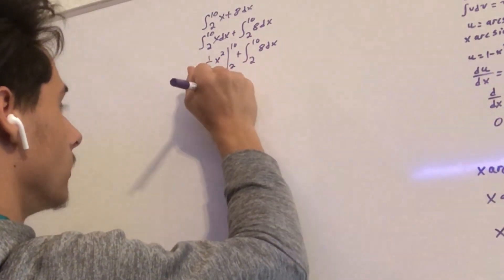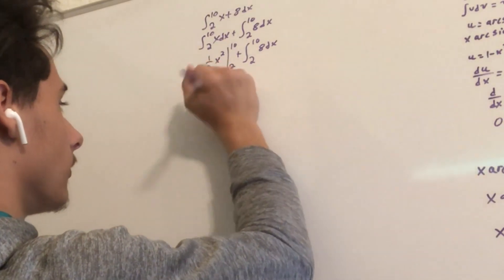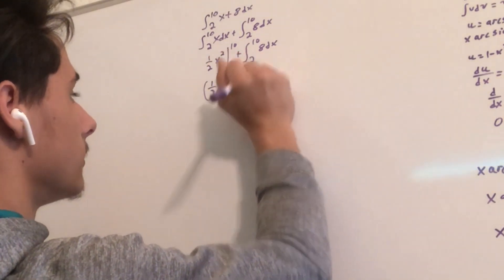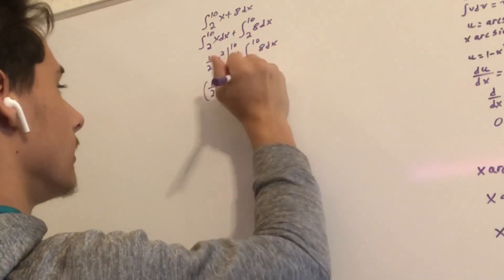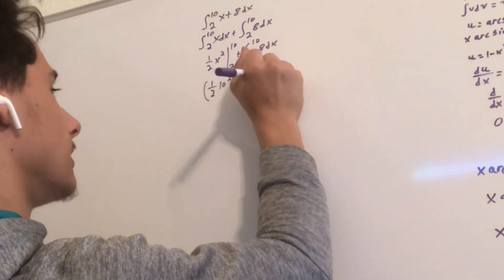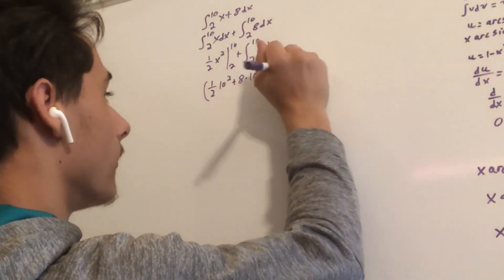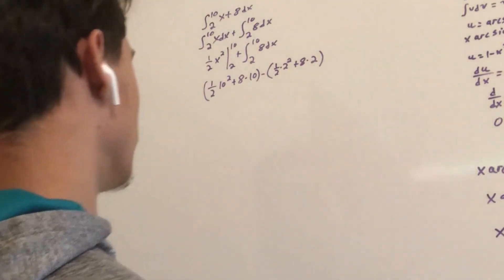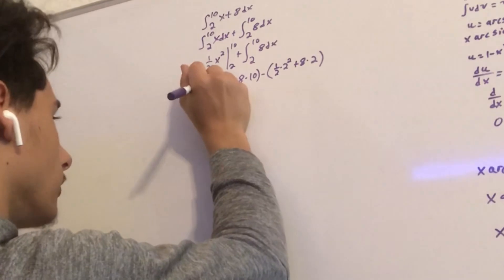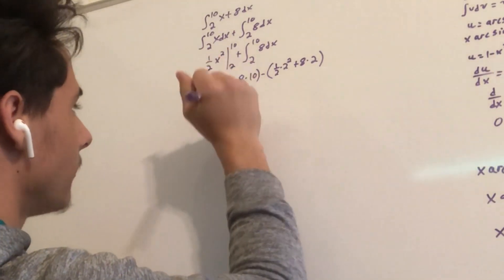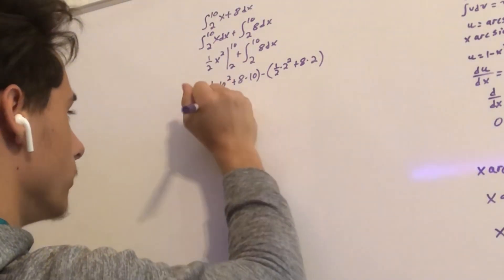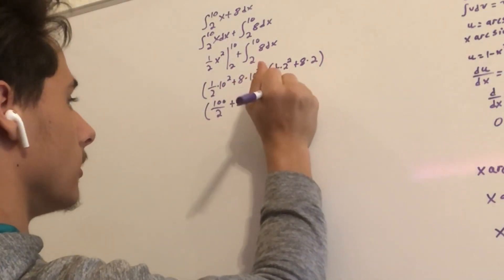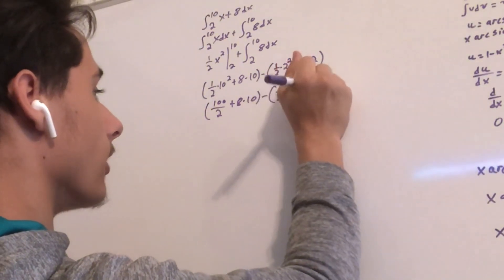So now we can solve these. The integral of x with respect to x is one half x squared, evaluated from 2 to 10, plus 8x evaluated from 2 to 10. So that's one half times 10 squared plus 8 times 10, minus one half times 2 squared plus 8 times 2. That gives us 100 divided by 2, plus 8 times 10, minus one half times 2 squared plus 8 times 2.